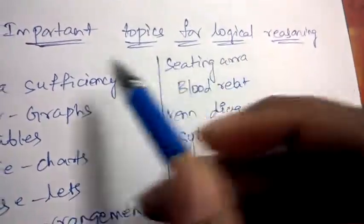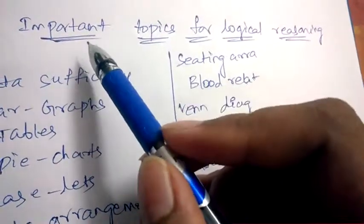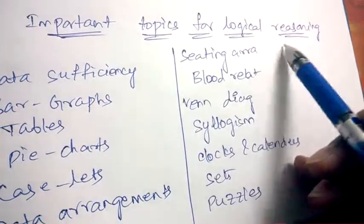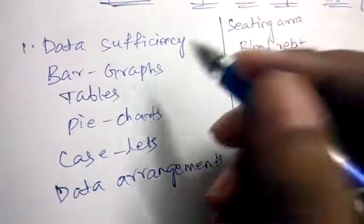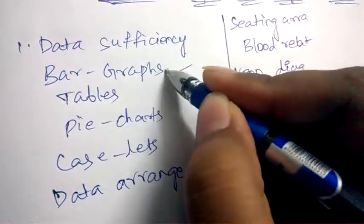Hello friends, welcome back to Best Way to Study. In this video we are going to discuss few important topics for logical reasoning. Let's begin. The first and foremost important topic is data sufficiency, next is problems on bar graphs.